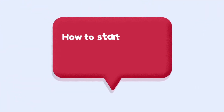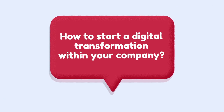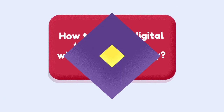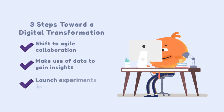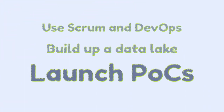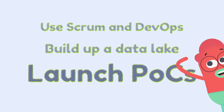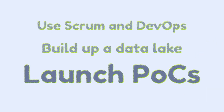We had a look at the guiding principles that you should follow in a digital transformation. But what does it take to start one in your company? There are three steps that you can take: you can shift to agile collaboration, make use of data to gain insights, and based on that you can launch experiments in vital areas. For example, use Scrum and DevOps for agile collaboration, build up a data lake for centralizing and making use of data, and launch proof of concepts.